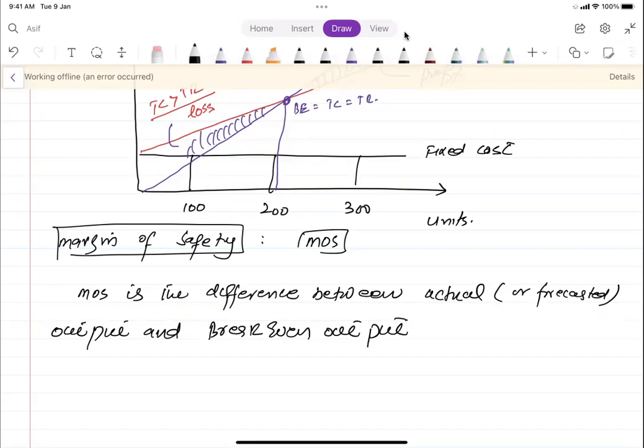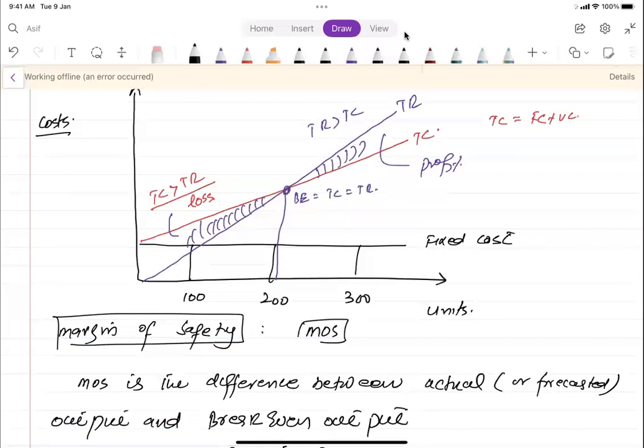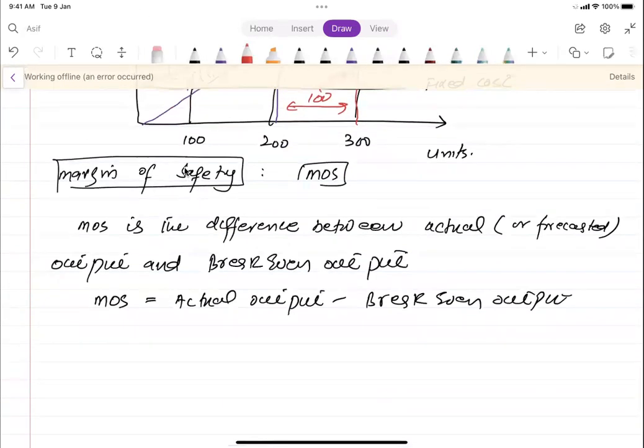Margin of safety is calculated as actual output minus break-even output. For example, in the above graph, if break-even output is 200 but the business produces 300 units, the difference is the margin of safety: 300 minus 200 equals 100. This is how we calculate margin of safety.